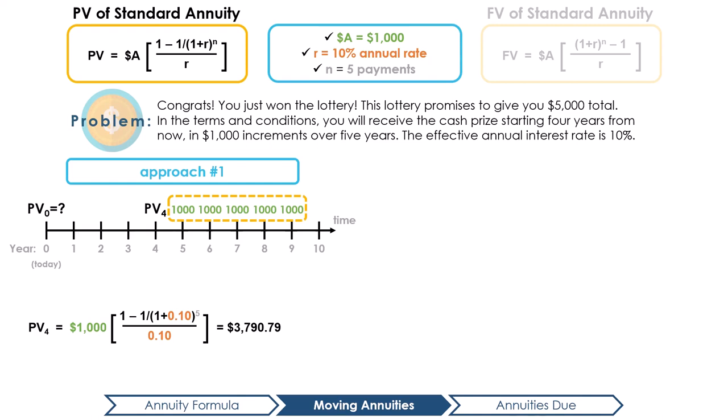This means that if you were to calculate what the value 4 years from now of getting $1,000 payments over the five years is, it is worth $3,790.79. However, this is not super helpful as this is the value 4 years from today. We need to discount this value by 4 years to calculate the value in today's dollars, i.e. PV0. Pause the video here and calculate PV0.